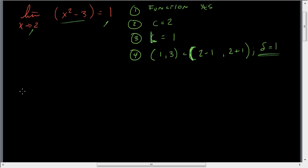Now that we have those four things that we needed to satisfy, we can take a look at what else we might need in case it doesn't fit this nice little delta equals 1 scenario. So we need to find a delta so that 0 less than x minus 2 is less than delta implies that f of x, or in this case, x squared minus 3 minus the limit of 1 is less than epsilon.